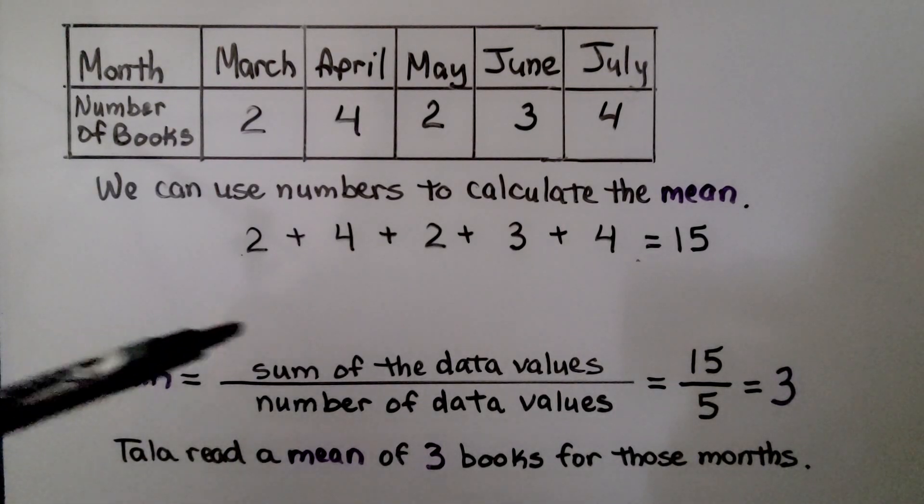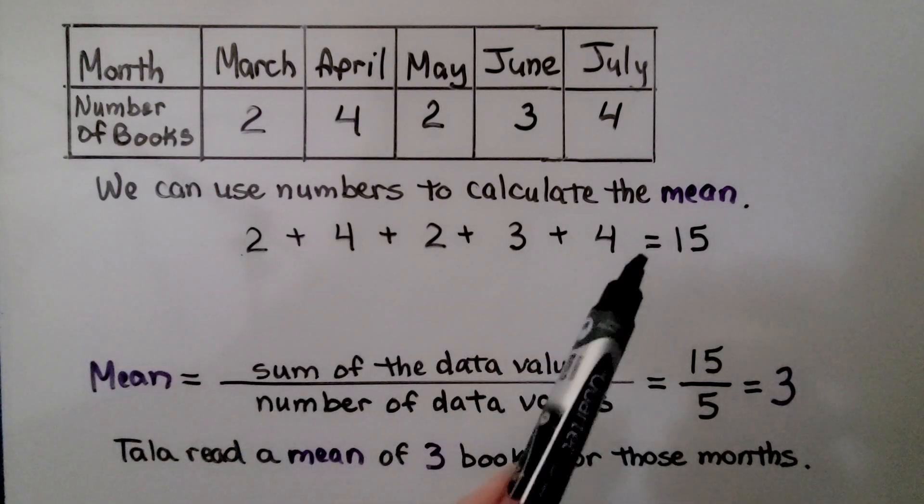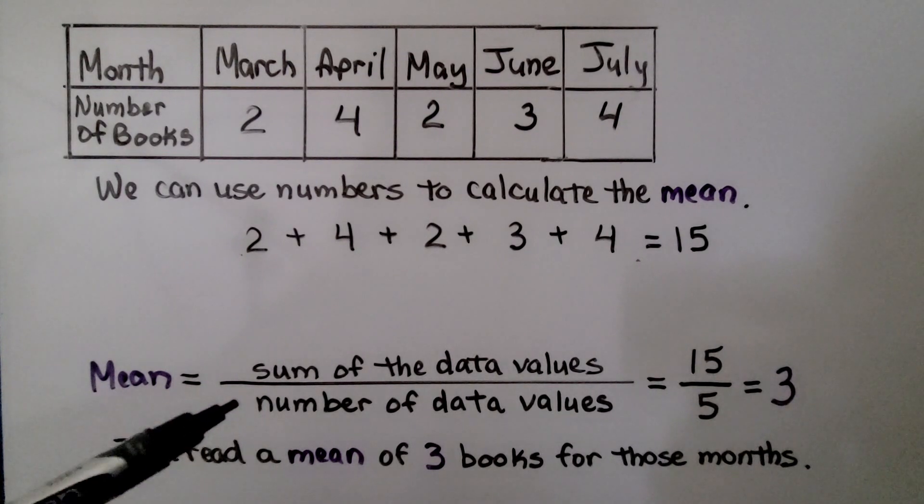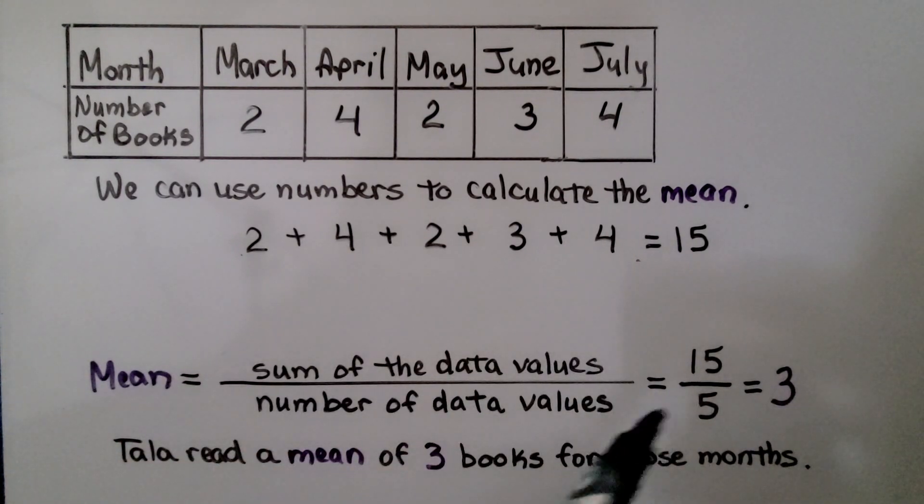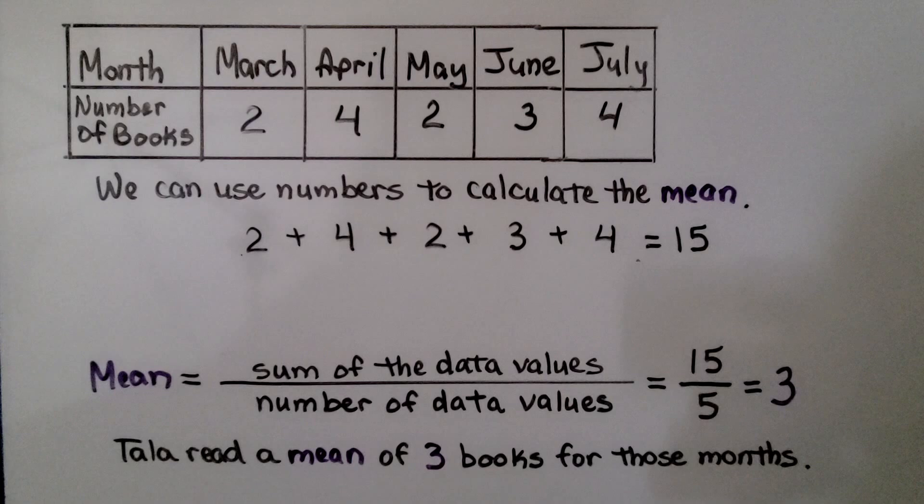The mean is the sum of the data values, the fifteen, divided by the number of data values. We had five. Fifteen divided by five equals three. We know Tala read a mean of three books for those months, an average of three books for those months.